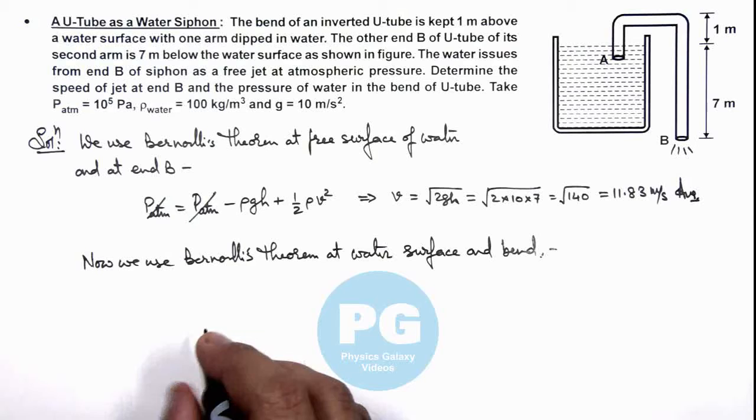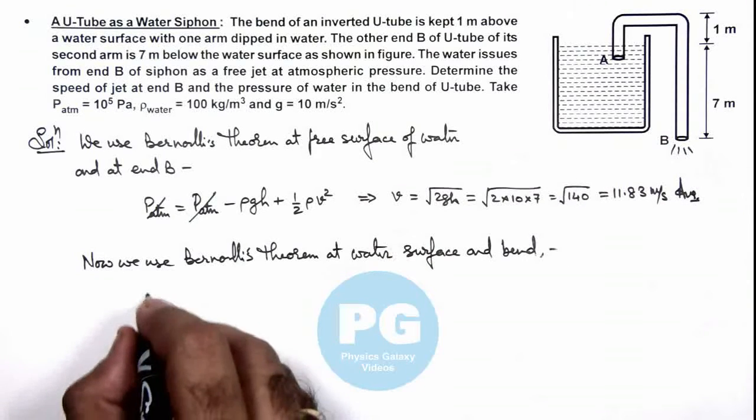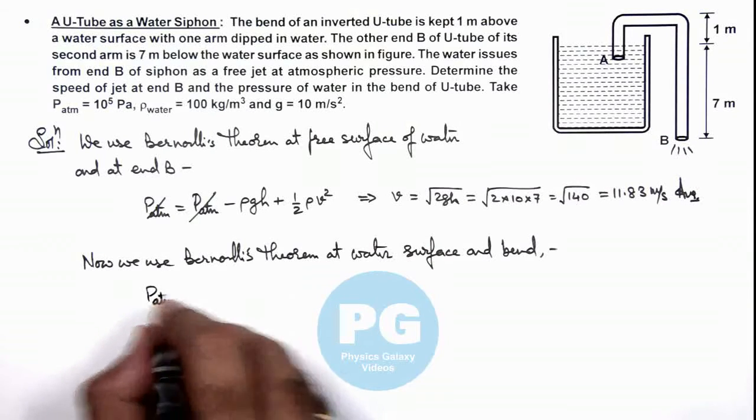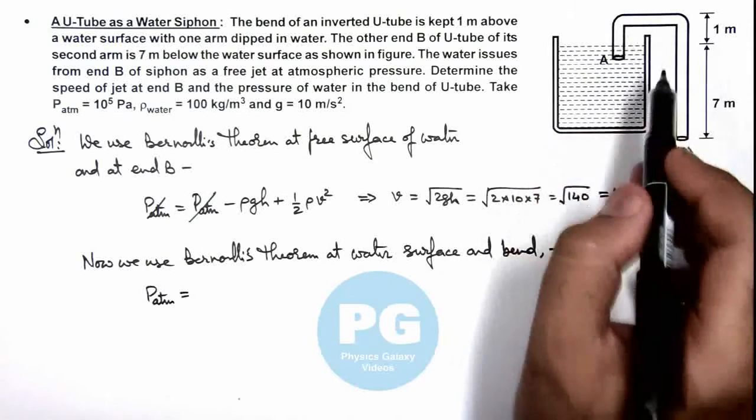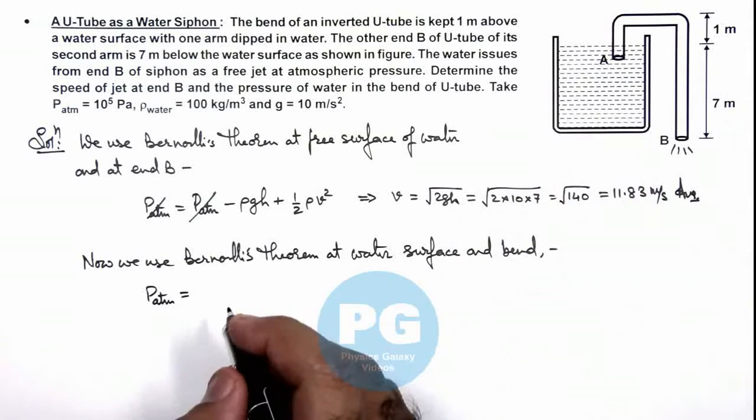Then here we get at water surface again the pressure is P atmospheric. And as the cross-sectional area of the tube is the same, the flow velocity of water will be the same as that of flow velocity at B.